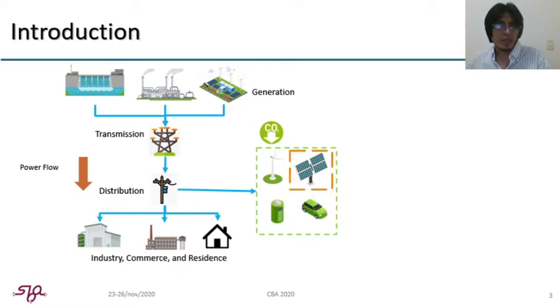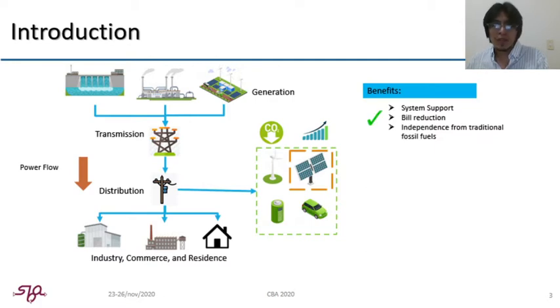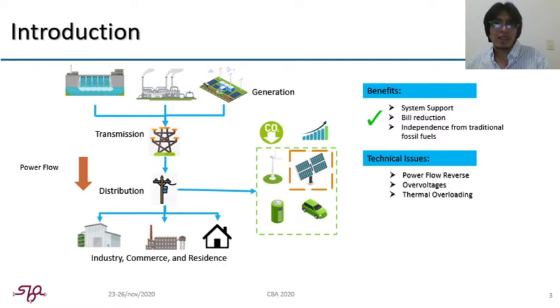Particularly, PV systems adoption was spread into the distribution network due to its cost-competitive option. This technology brought system support benefits, bill reduction, and independence from traditional fossil fuels. However, the traditional distribution network was not designed to operate under intermittent power generation, and this poses issues such as power flow reverse, over voltages, and thermal overloading.